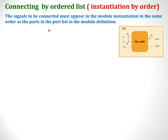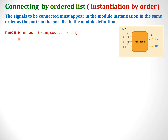First method: connecting the ports by the ordered list or instantiation by order. The signals which need to be connected — when you are calling a module within another module, we pass some parameters in the port list. Those signals must appear in the module in the same order as they are in the port list in the module definition. To understand this, let us take the example of a full adder. We have the top module and the full adder module. The module name here is full_adder_4 and we list the port list: sum, cout, a, b, cin — listing all the input and output variables.